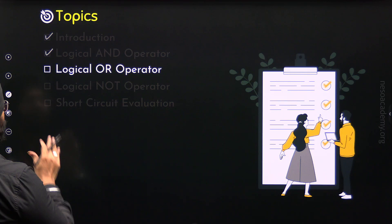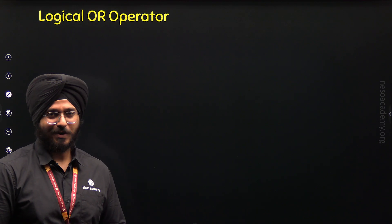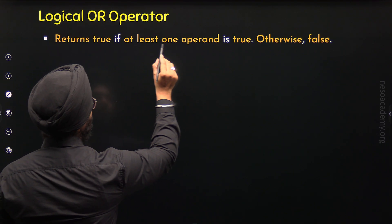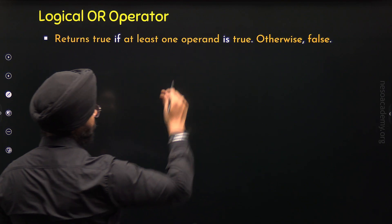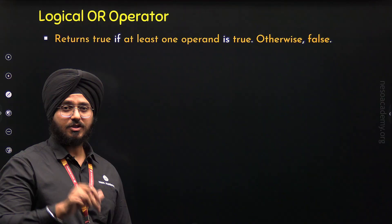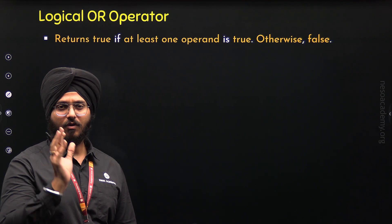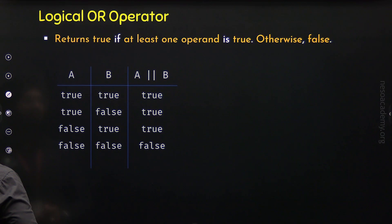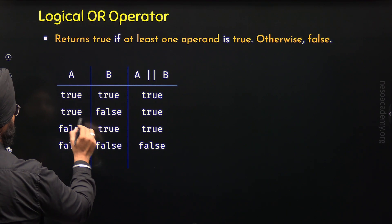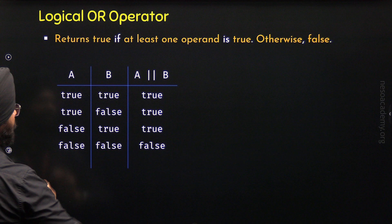Now let's move to the third topic: the logical OR operator. Logical OR operator is the operator that returns true if at least one operand is true; otherwise it returns false. It is not mandatory that both operands must be true — if at least one operand is true, we get true. This can be understood from the truth table: when at least one operand is true, we get true. Only when both operands are false do we get false.